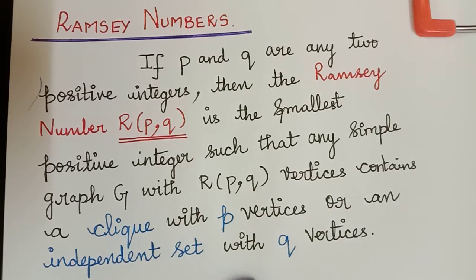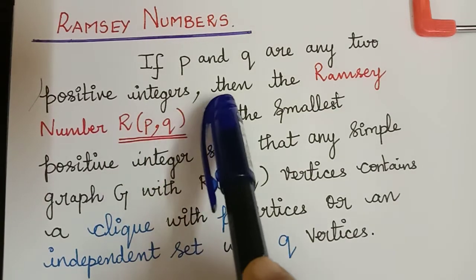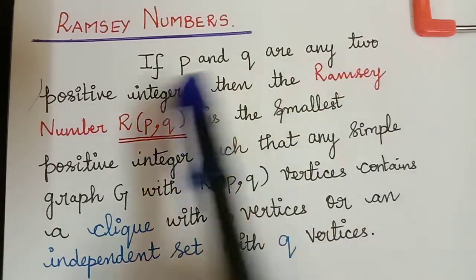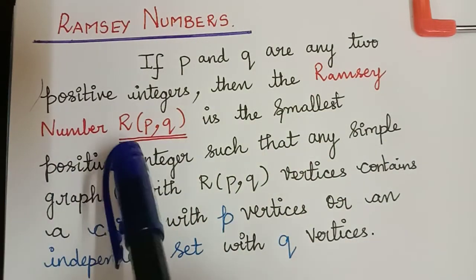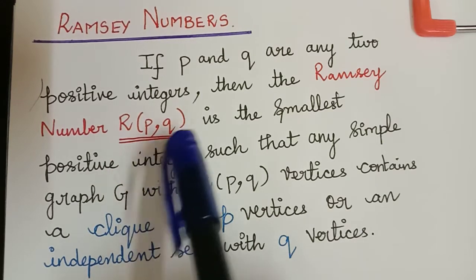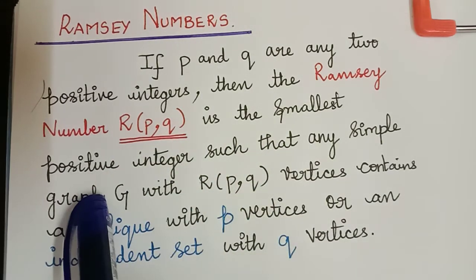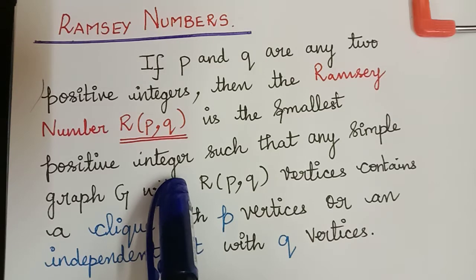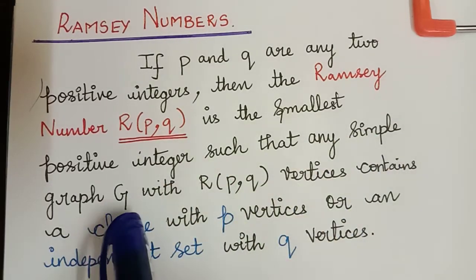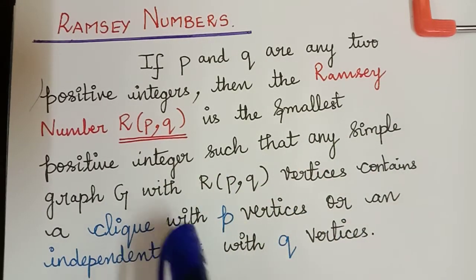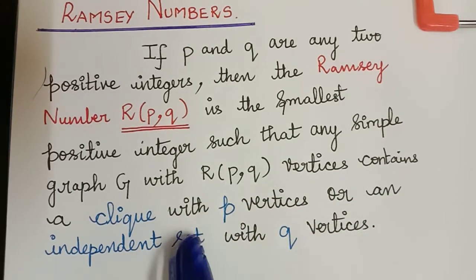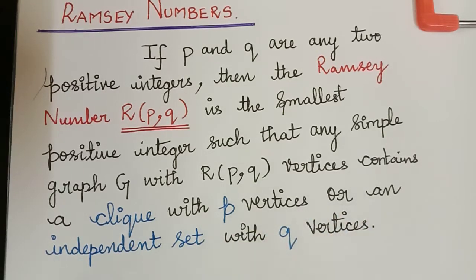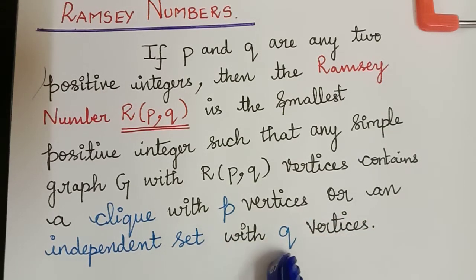Now let us see the definition of Ramsey numbers. If P and Q are any two positive integers, then the Ramsey number R(P,Q) is the smallest positive integer such that any simple graph G with R(P,Q) vertices contains a clique with P vertices or an independent set with Q vertices.